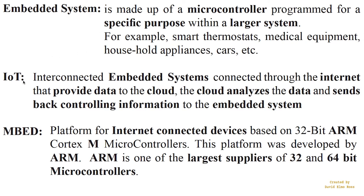IoT, or Internet of Things, means when you have these embedded systems connected through the Internet to provide data to the cloud. The cloud analyzes the data and sends back controlling information to the embedded system. For instance, if you have a smart thermostat connected to a cloud, the cloud can analyze what's going on in your house in terms of temperatures and send back controlling information to the thermostat to make your house a lot more efficient in terms of heating and cooling.